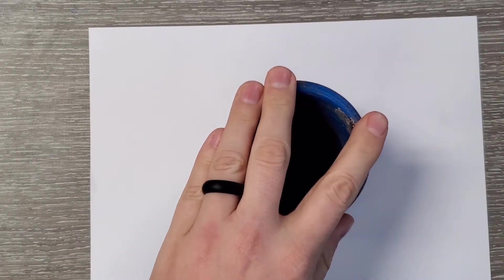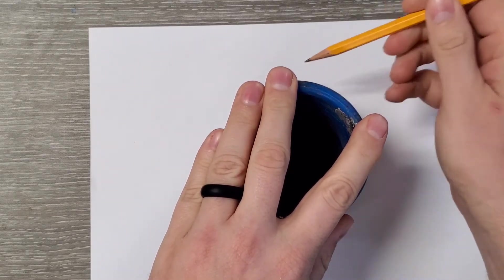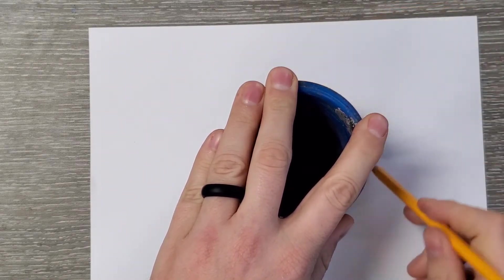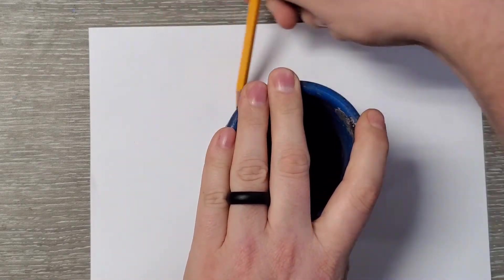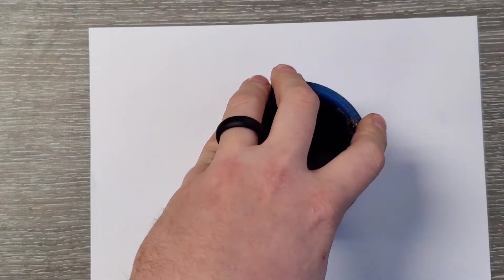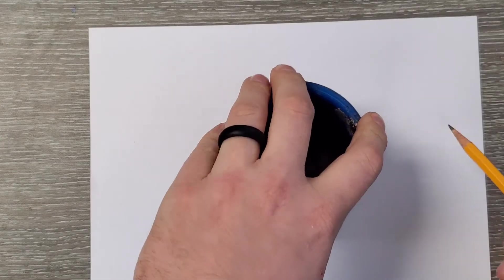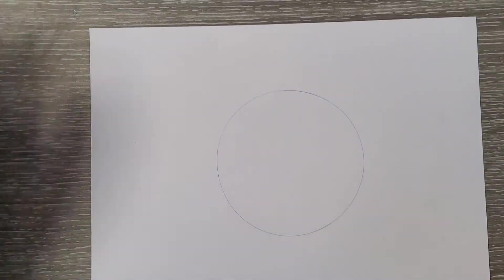So I'm going to take a little object here, and I'm going to be using a regular number two pencil. And I'm just going to trace this object. I'm going to do it kind of lightly. I don't want this to be a permanent circle. I may want to get rid of it at one point. So I want it to be pretty light.